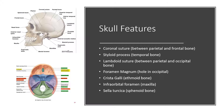There are several features found on the skull. There's the coronal suture, which is the suture between the parietal and the frontal bone. There's also the styloid process found on the temporal bone. There's the lambdoid suture that separates the parietal and the occipital bone. The foramen magnum is a very important hole in the occipital bone that connects with the spinal cord. There's also the crista galli in the ethmoid bone, the infraorbital foramen in the maxilla, and the sella turcica in your sphenoid bone, which is the butterfly-shaped bone.